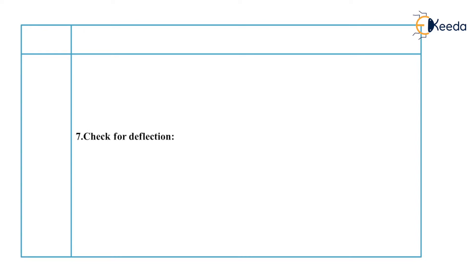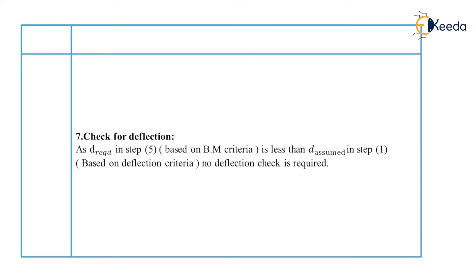Now it's time to check. For deflection: since the required depth from the bending moment check (81 mm) is less than the assumed effective depth from the deflection criterion (180 mm), the slab is safe in deflection and no further check is needed.